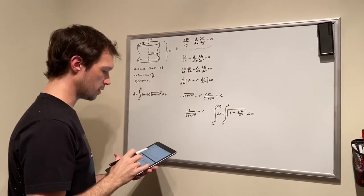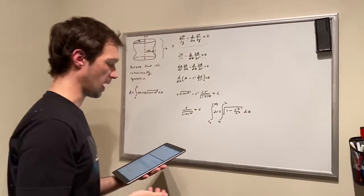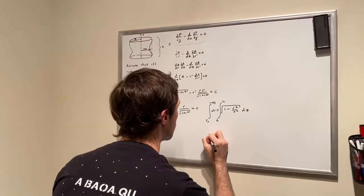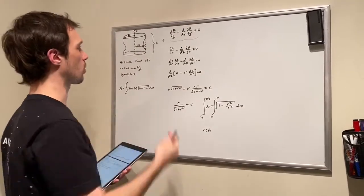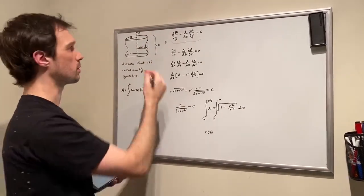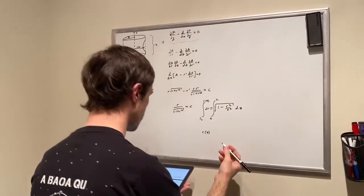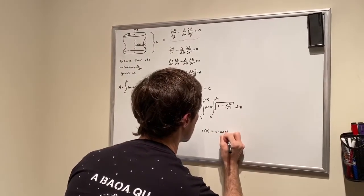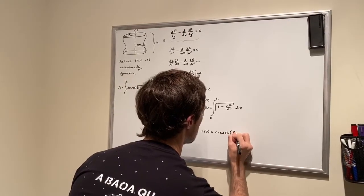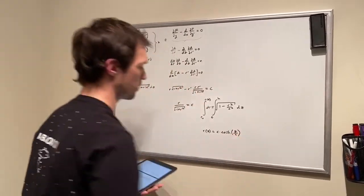So essentially when we do this we actually end up getting that R the function that our that our film will take or at least a slice of our film in this direction is going to be equal to a constant times hyperbolic cosine of Z over that same constant.